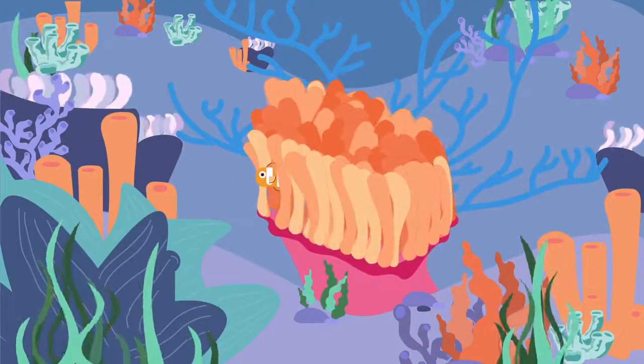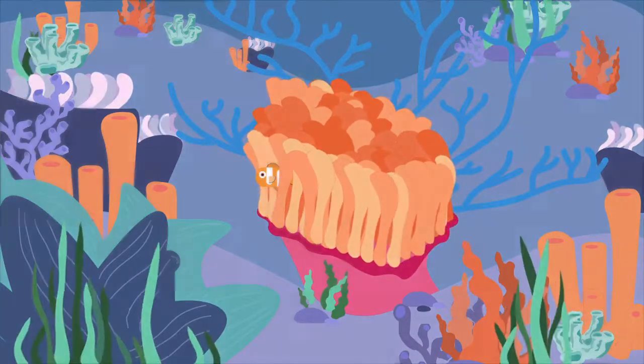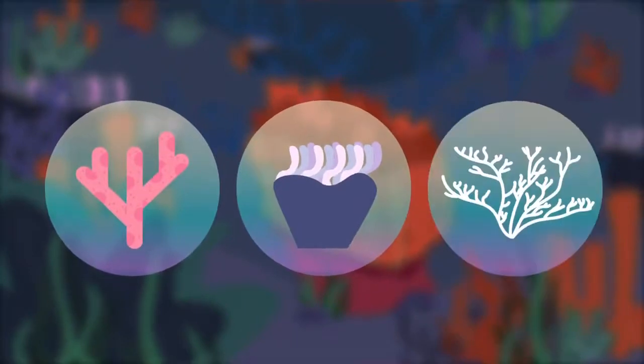Anemones are a type of coral and corals are actually animals. There are three types of coral: hard coral, soft coral, and deep sea corals.